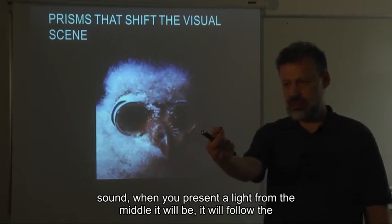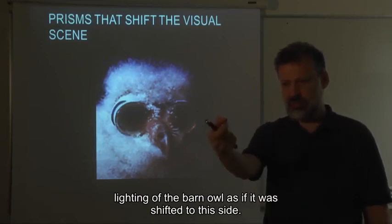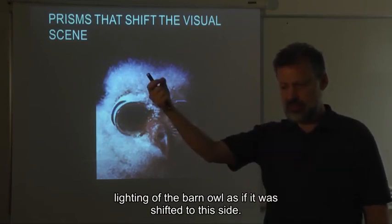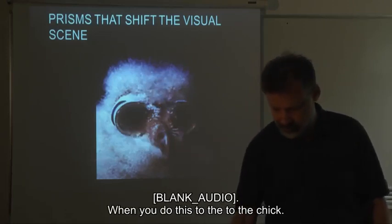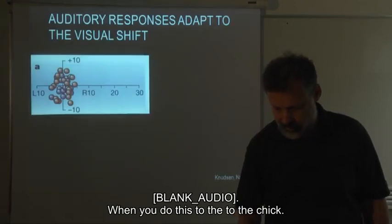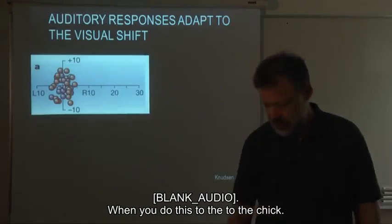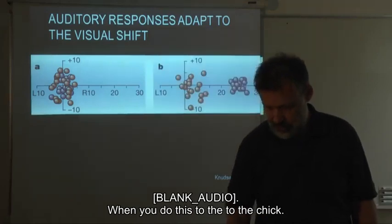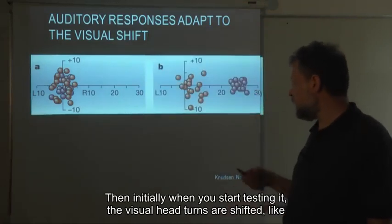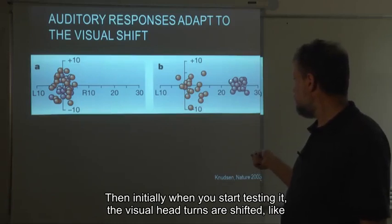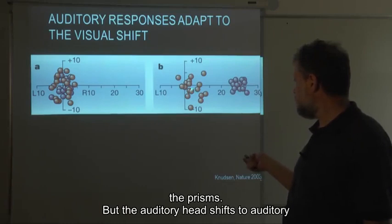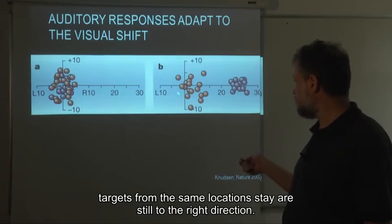When you present a light from the middle, it will fall on the retina of the barn owl as if it was shifted to the side. When you do this to the chick, initially when you start testing it, the visual head turns are shifted like the prisms. But the auditory head turns — to auditory targets from the same location — stay correct and are still in the right direction.